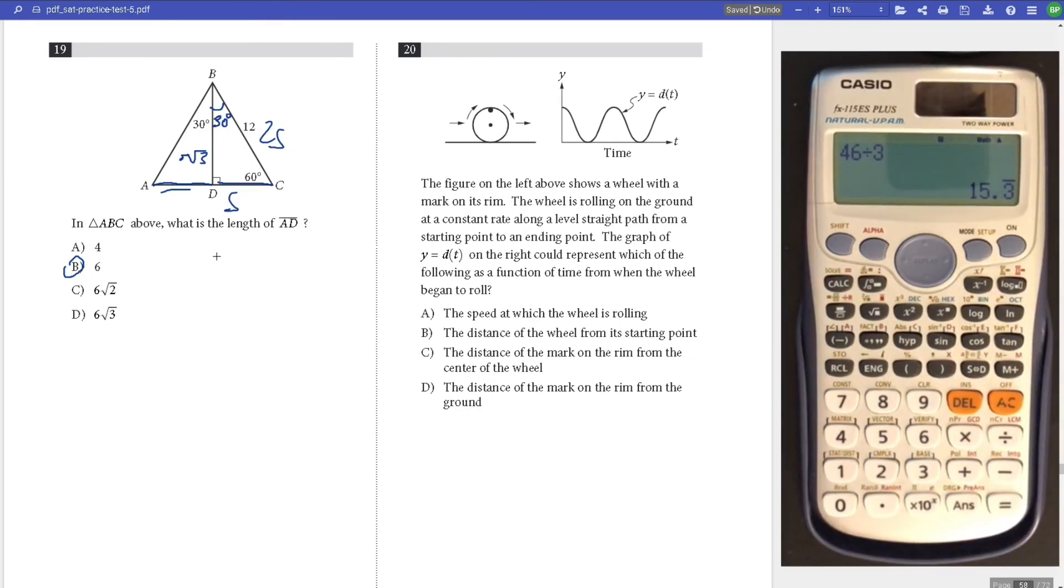Number 20, given this graph, the wheel was rolling at constant rate. The graph on the right could represent which of the following as a function of time when the wheel began to roll? It's actually D because it's basically telling you what the height of the thing above the ground is. When we started here, the height is here. Answer is D.